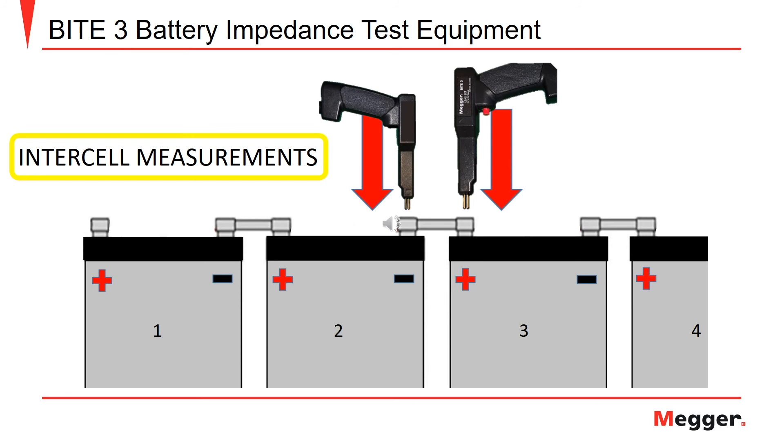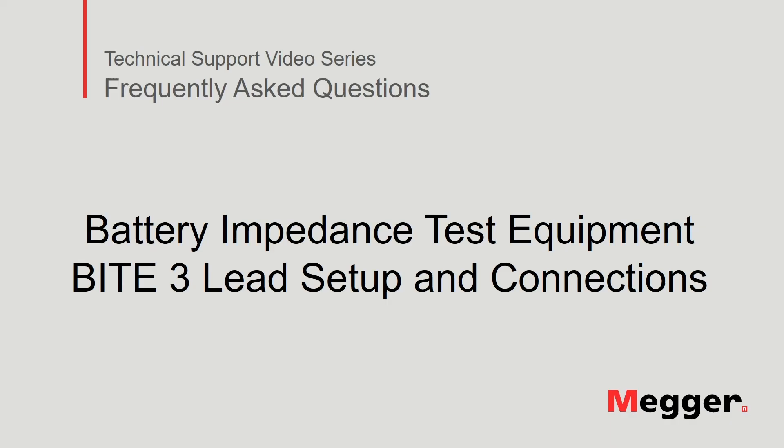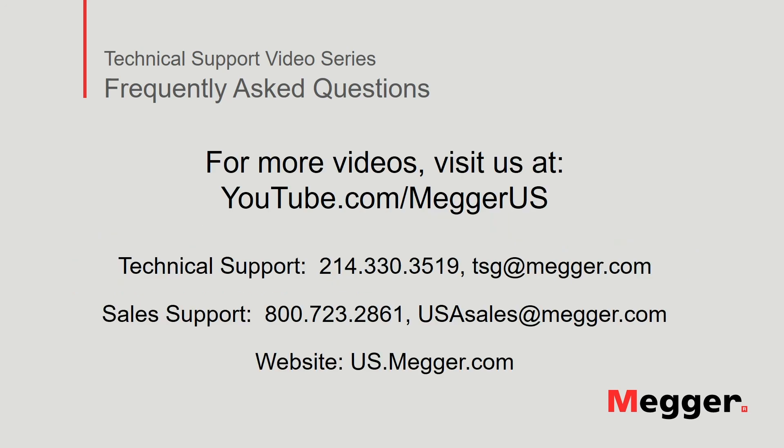Once you have completed testing, press the menu button on the transceiver and select the save and close option to finalize the test. This concludes our discussion of the lead setup connections and finalizing a test for the Megger Byte 3 battery impedance test equipment. Visit the Megger YouTube channel for more videos including technical webinars, product overviews, and other how-to presentations similar to this one. Contact us for questions or more information about this topic or for any support you may need for your electrical testing.